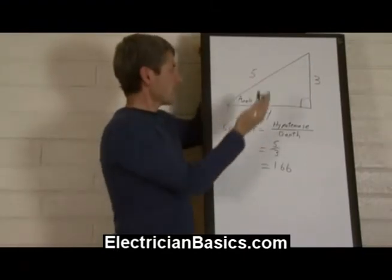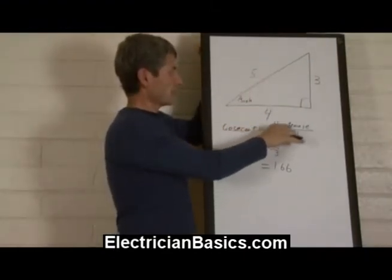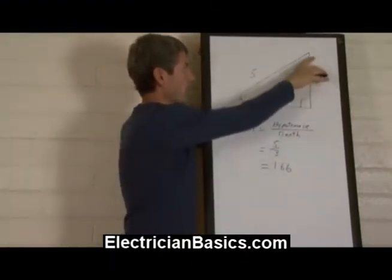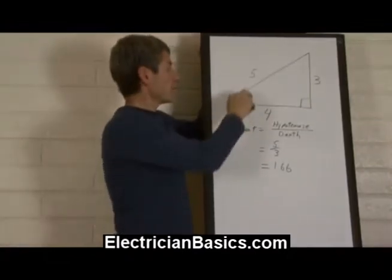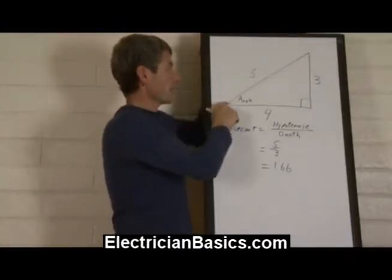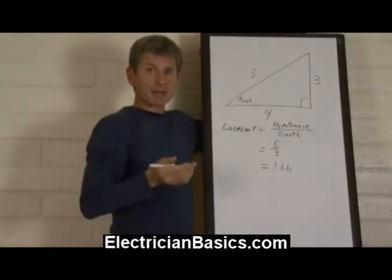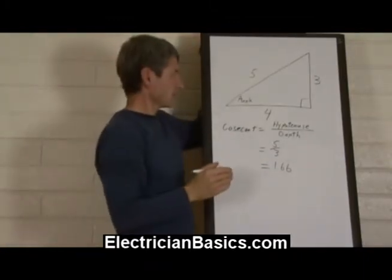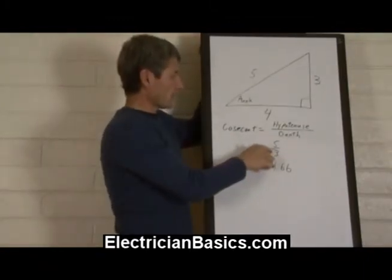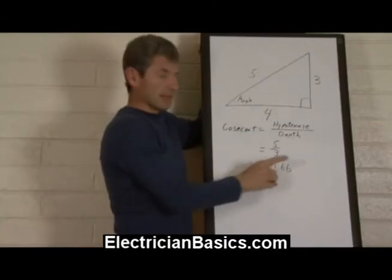So the cosecant of course we know is equal to the hypotenuse over the depth. And of course we know that this would be the distance between our marks is 5 and if we divide it by the depth we get the cosecant. So 5 divided by 3 which is 1.66.